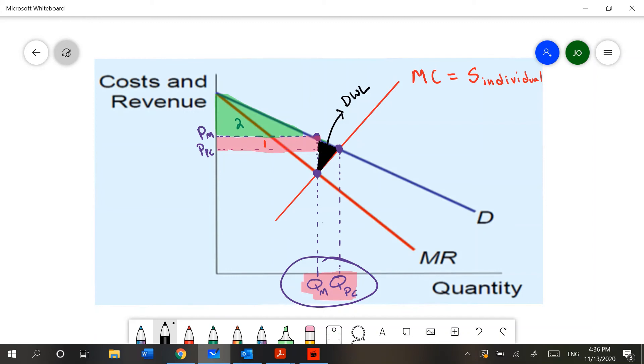In summary, a monopoly takes surplus from the consumer and transforms it into profits for the monopoly. A monopoly will also cause inefficiency in the form of deadweight loss.